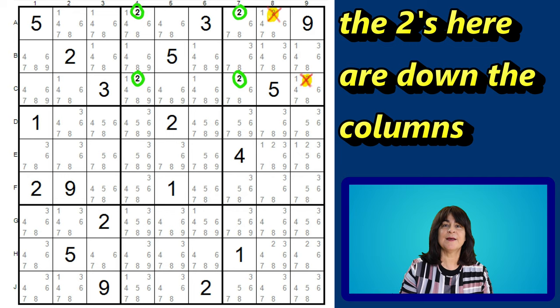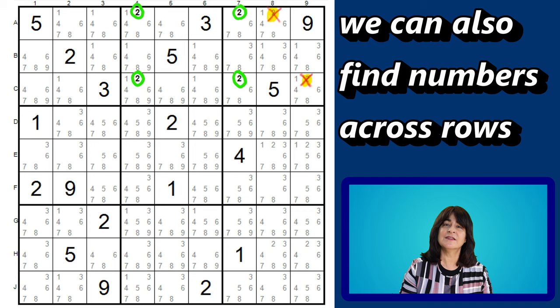In this example, we found the matching candidates, the twos, down the columns forming an X-wing or rectangle, and then eliminated all the other twos in those rows. This rule also applies when we find candidates across the rows. We can then eliminate the penciled-in candidates down the columns. Here's an example of that.